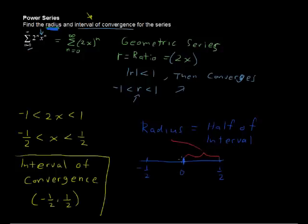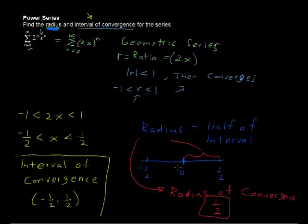which is the distance from the center to one side of the interval, is the radius. So the radius of convergence would just be one-half. I'll jot that down: one-half. Again, the interval is not always centered at 0, but in this example it was.